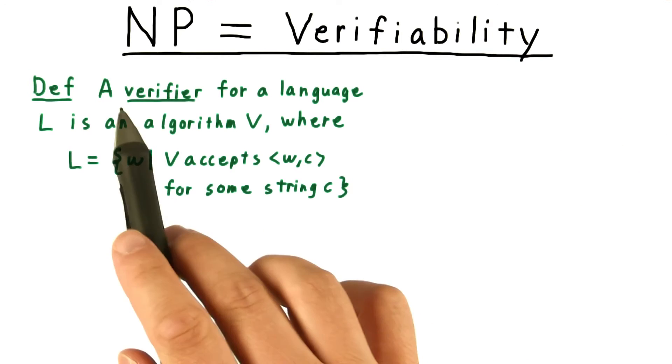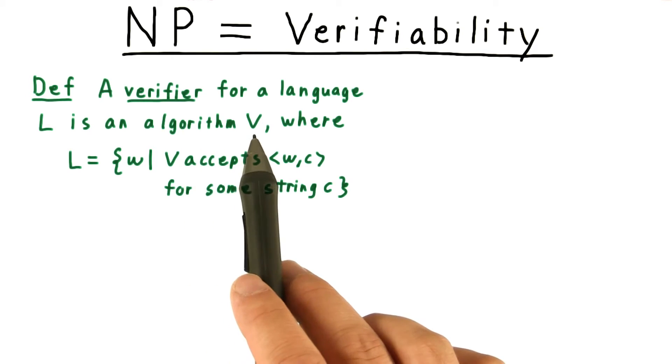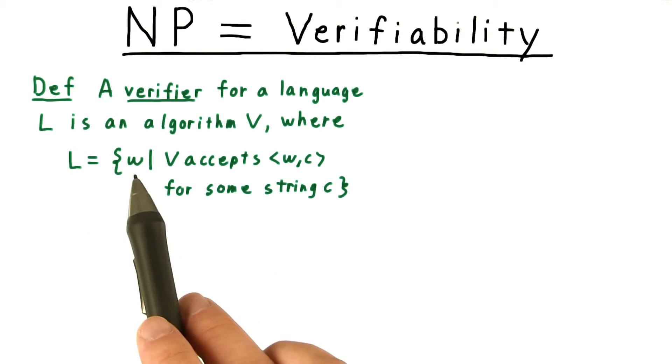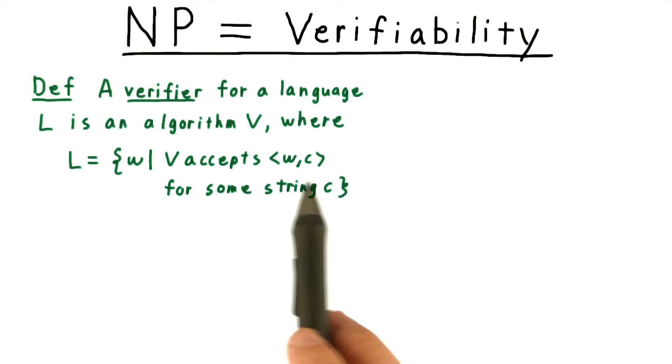Now for the more formal argument. A verifier for language L is a deterministic Turing machine, where L is the set of strings W for which there's another string C such that V accepts the pair W,C.